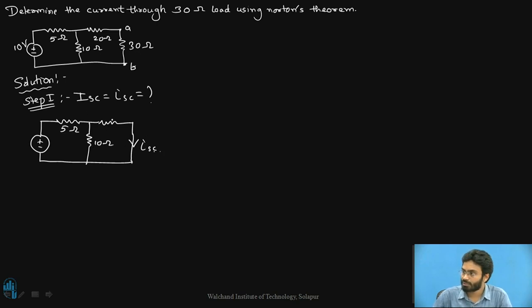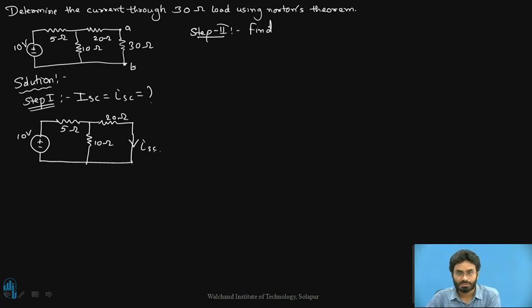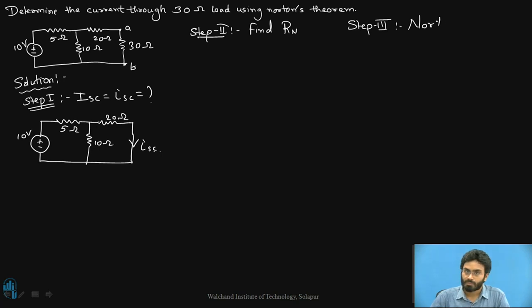Here we have 5 ohms, 10 ohms, and 20 ohms, with 10 volts connected back. In step two, we are going to find the equivalent resistance — for Norton's theorem we call this Rn, the Norton's resistance — by removing the load and looking back into the circuit. Finally in step three, we are going to draw the Norton's equivalent circuit.